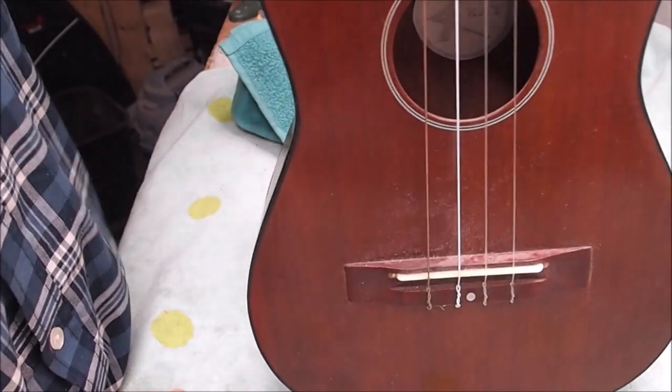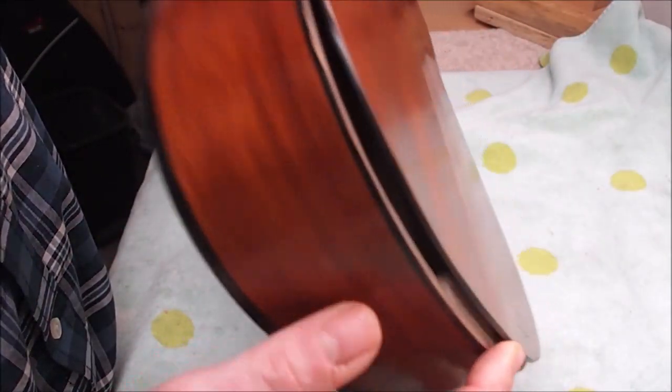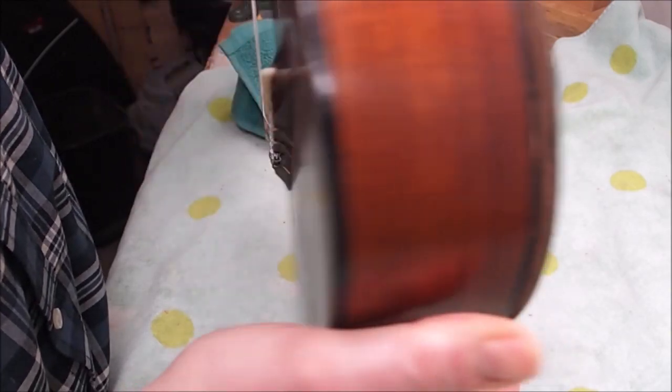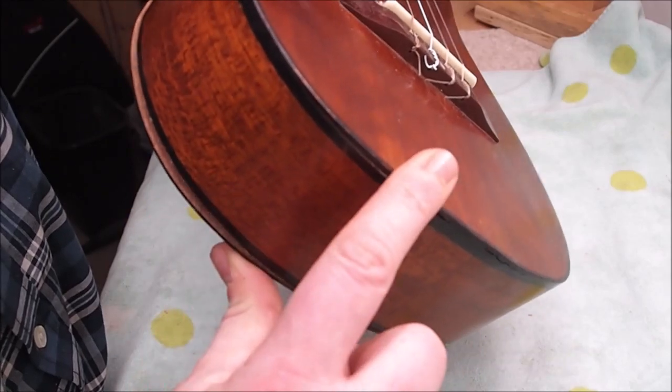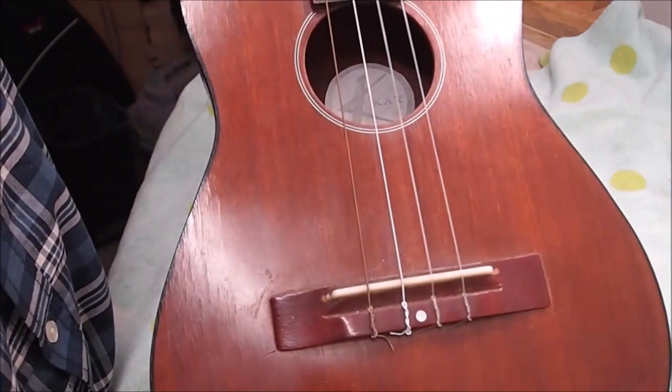Now I don't know for certain, but I think this thing probably took a pretty good fall at some point because the back is separated from the lining all the way around the lower bout, and there's also a seam separation between the soundboard and the tail block. So there's going to be a lot of gluing to do. Other than that it seems like it's in pretty good shape.